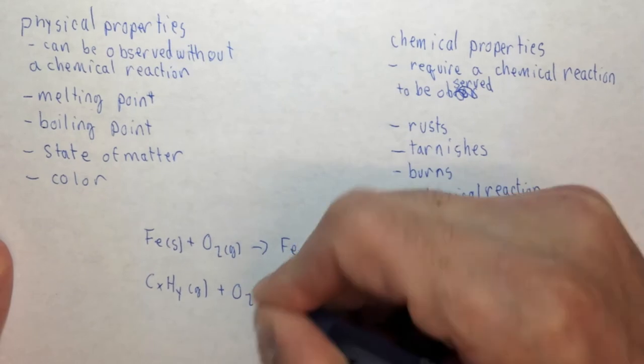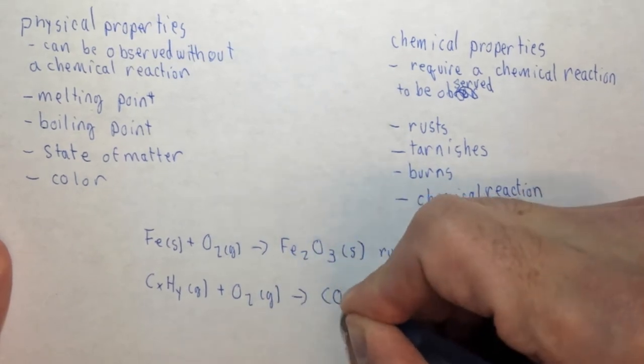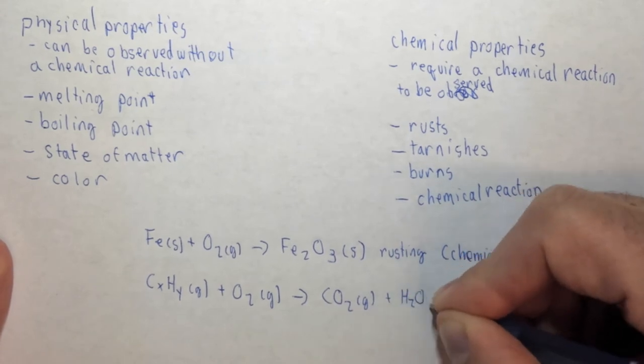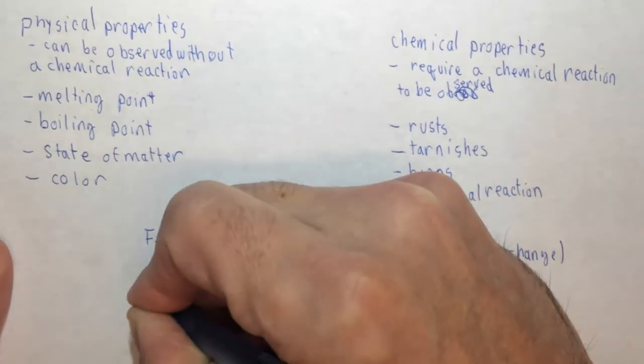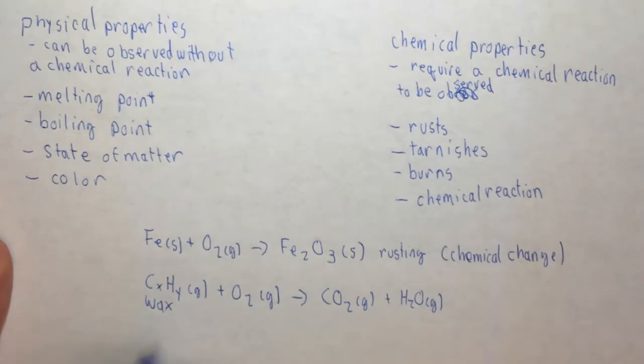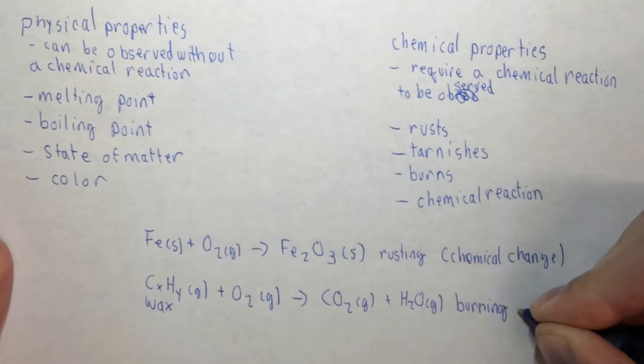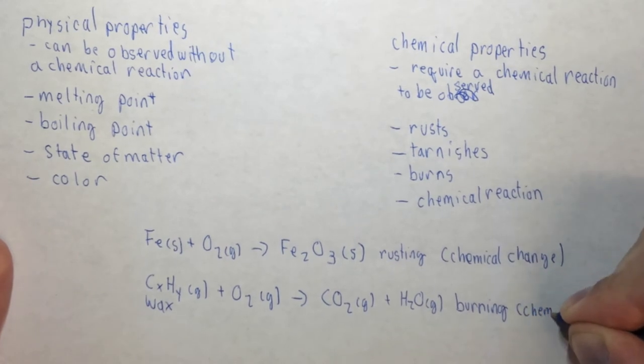Wax is CxHy, probably as a gas when it actually burns, plus oxygen gas yields carbon dioxide gas plus water. And again, we're not worried about balancing this. And this is wax. We're not going to worry about how many carbons and how many hydrogens. X and Y just means some number of carbons and some number of hydrogens. This is burning, and this is again a chemical change.